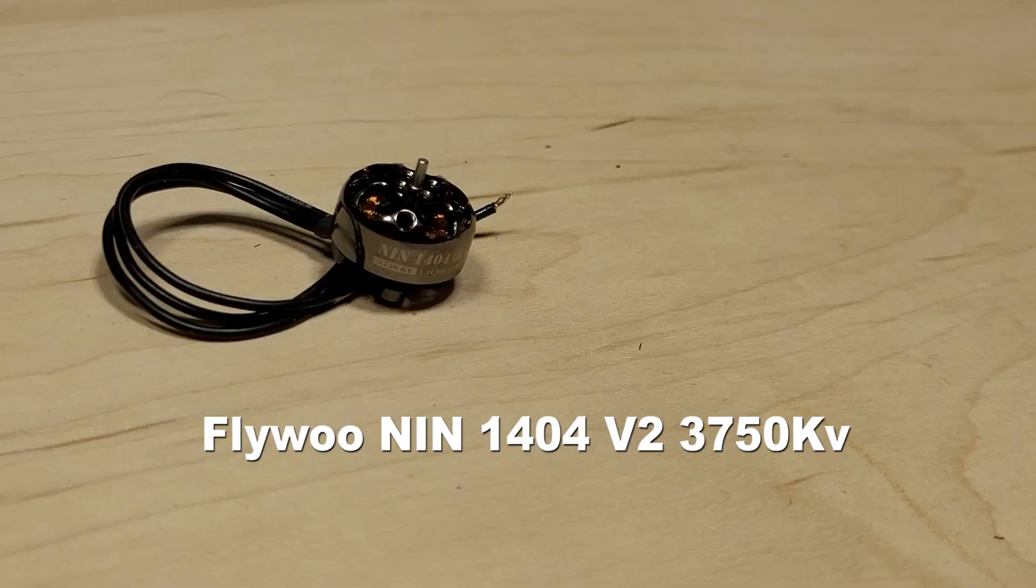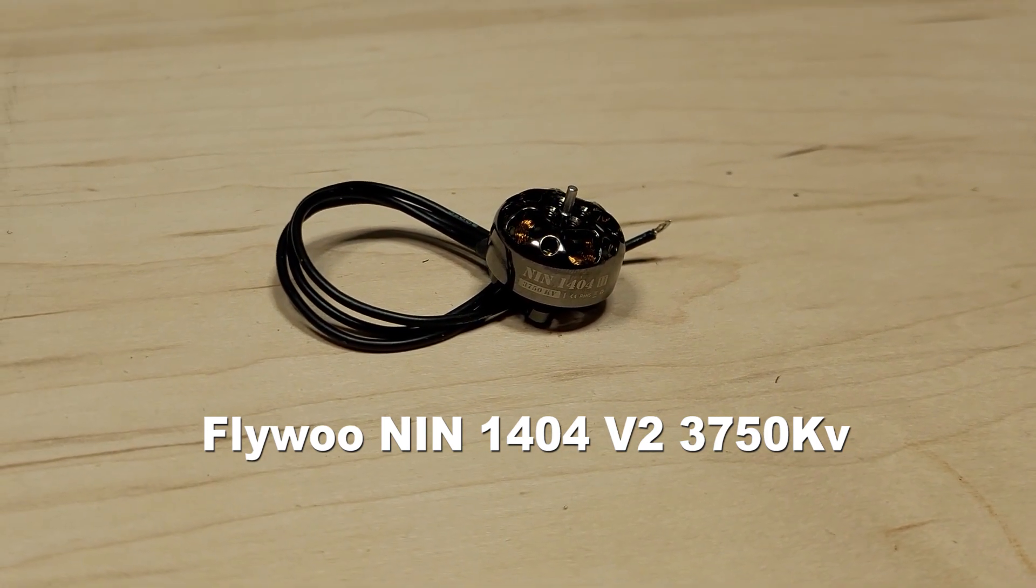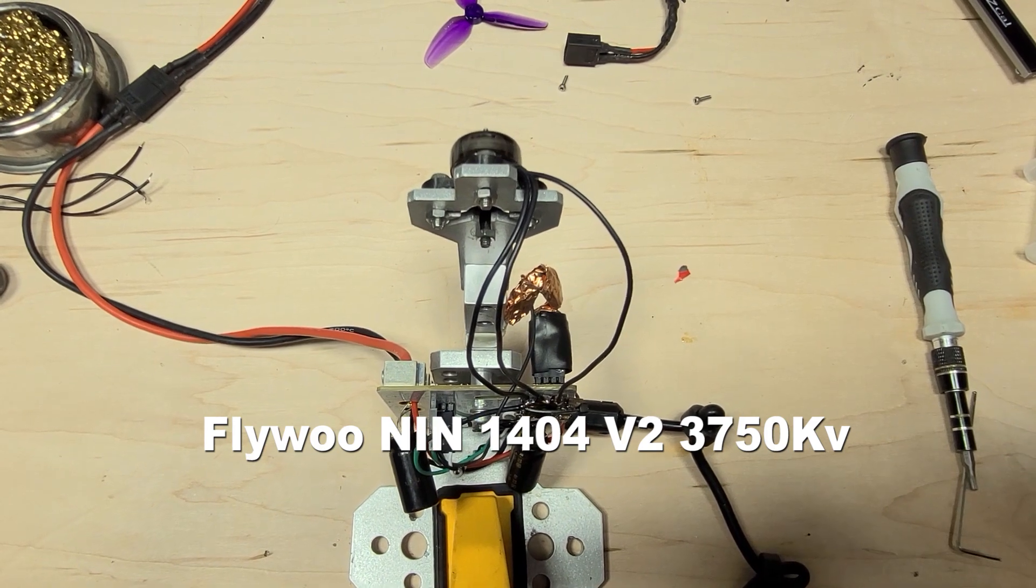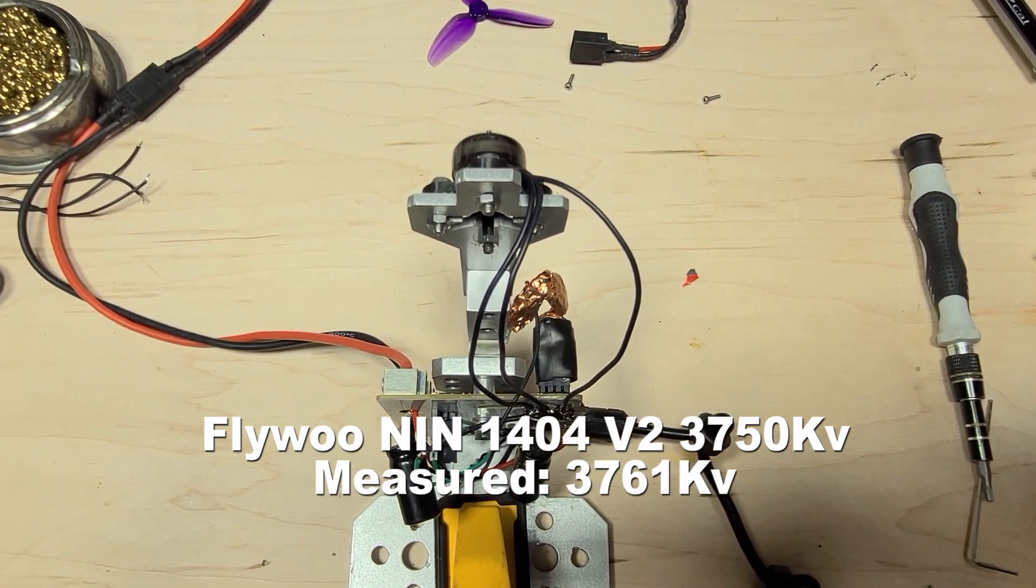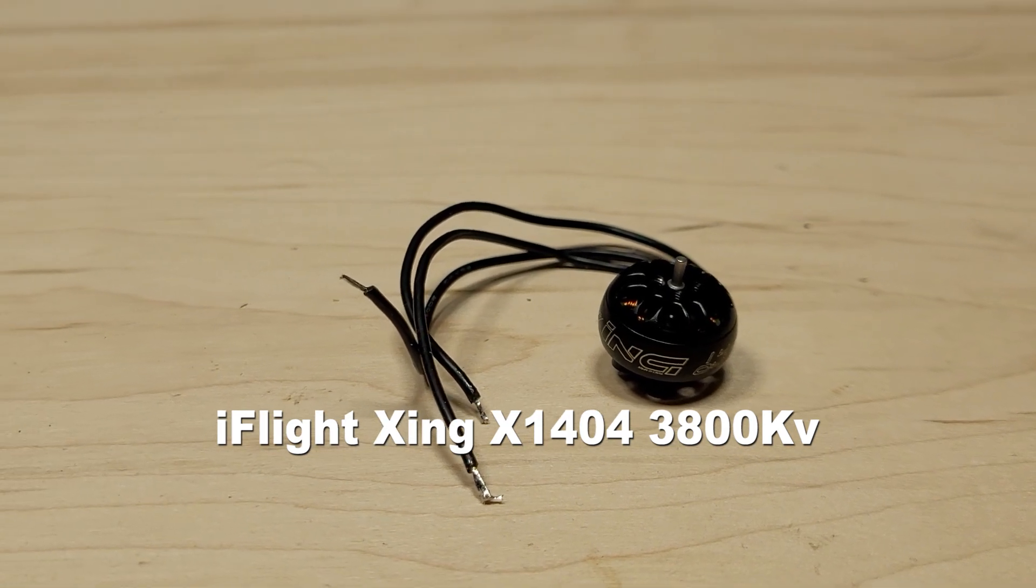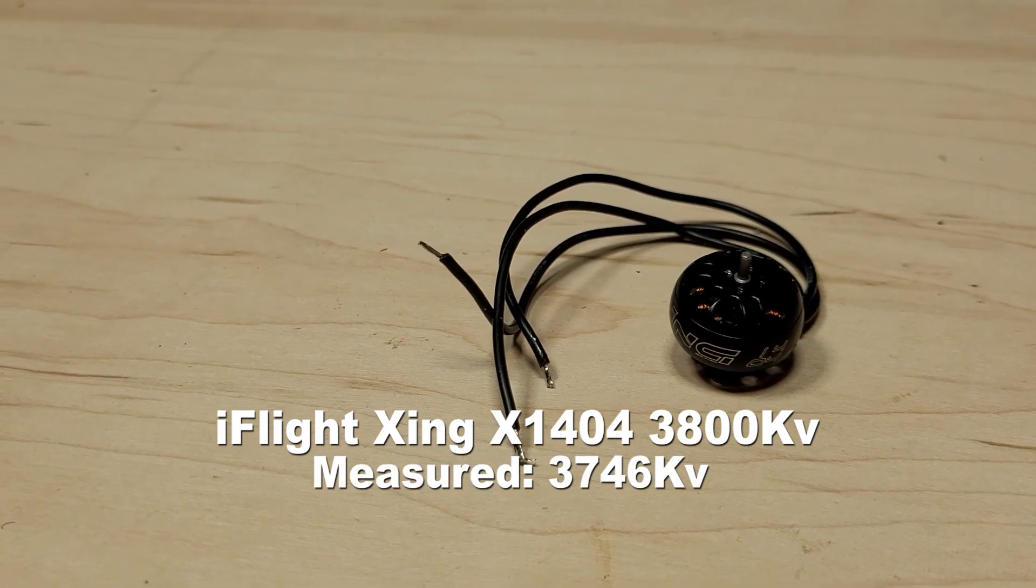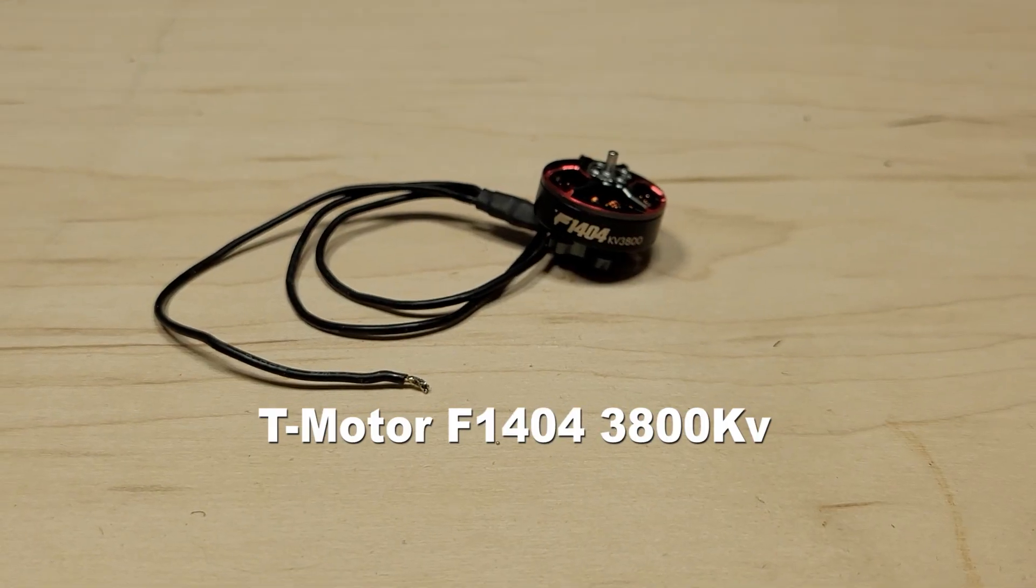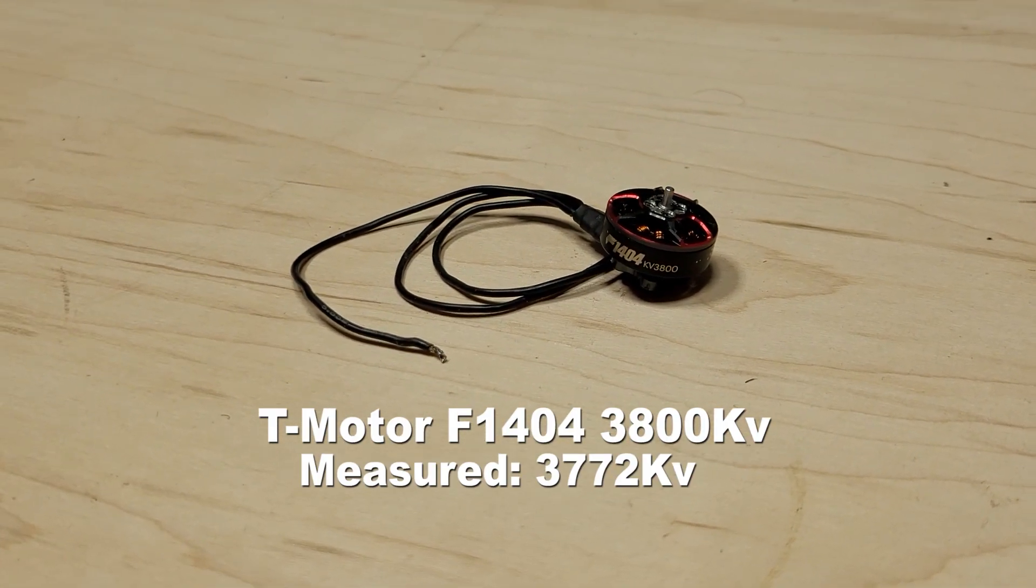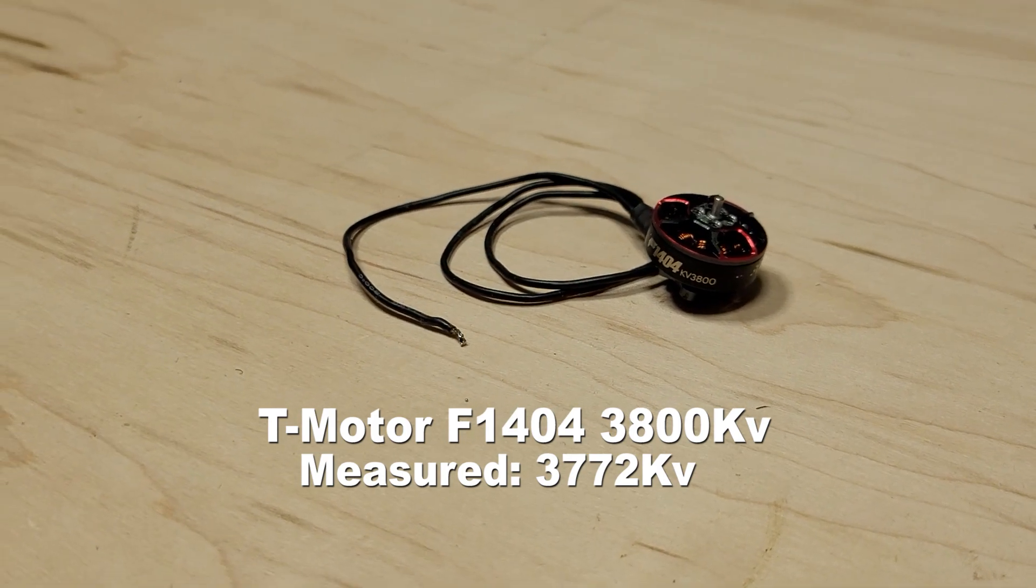The motors being tested today are: Flywoo NIN 1404 V2 3750 KV David C branded motor, measured at an actual 3761 KV, 0.3% over spec. iFlight Ching X1404 3800 KV motor, measured at an actual 3746 KV, 1% under spec. T-Motor F1404 3800 KV motor, measured at an actual 3772 KV, 0.7% under spec.